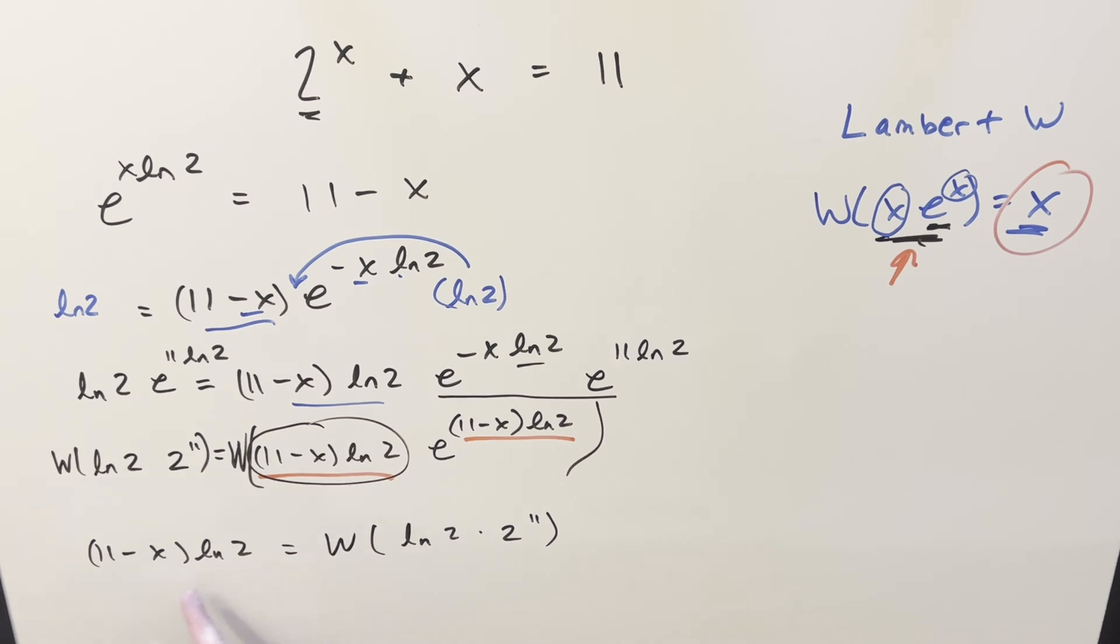Now from here, I'm going to solve for x. So first I can divide off ln 2 on both sides, divide off ln 2 here, that's going to cancel. Let's subtract off this 11 on both sides, subtract 11 right here.